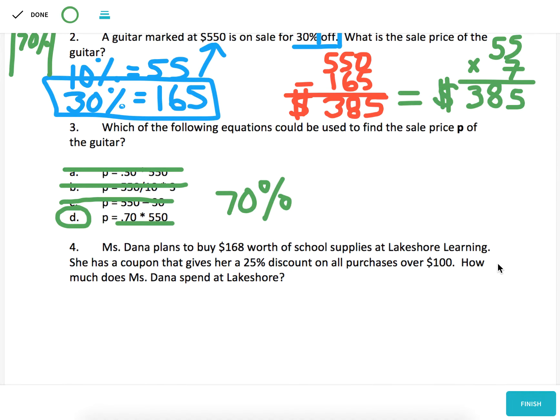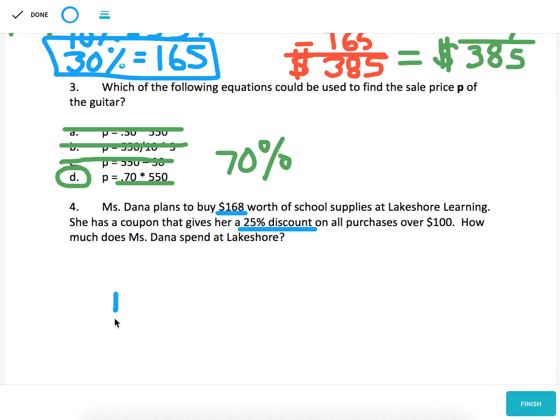Number four, Miss Dana plans to buy $168 worth of school supplies at Lakeshore Learning. She has a coupon that gives her a 25% discount on all purchases over $100. How much does Miss Dana spend at Lakeshore? So here we have a discount. That means we need to find 25% of 168 and subtract it away. The fastest way to find 25% is to divide by four because 25% is one fourth or a quarter. So that gets us 42. Now we take that and subtract it away because discount means subtract from the original price. And we get $126.